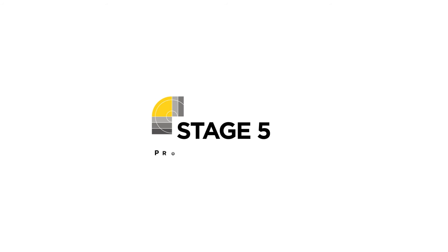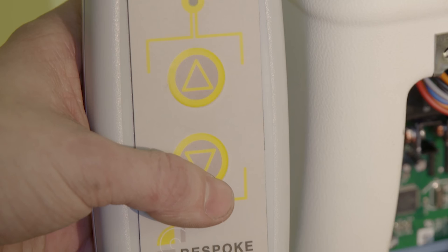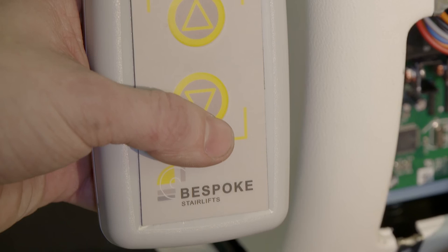Stage 5: Programming the remote. The next steps must be followed precisely and carefully to ensure the remote is properly programmed and linked to the stairlift.